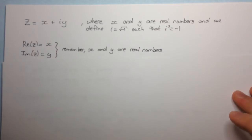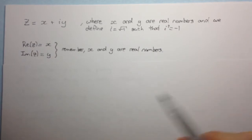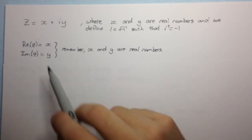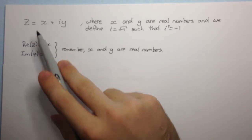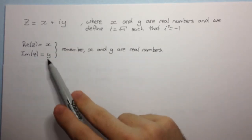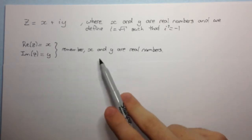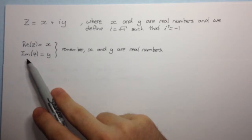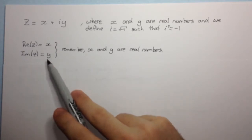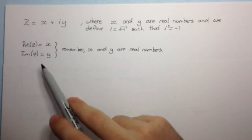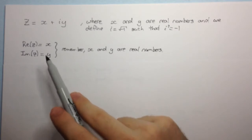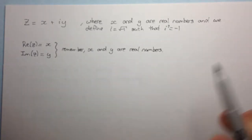A complex number has two parts. It has a real part, which we denote by Re of z, and that's equal to x. And it also has an imaginary part, which is equal to y. Now it's important to remember that x and y are real numbers. So even though y is the imaginary part of z, the reason it's the imaginary part is because it's being multiplied by i. So y itself is a real number, but because it's multiplied by i, it's the imaginary part of the complex number.